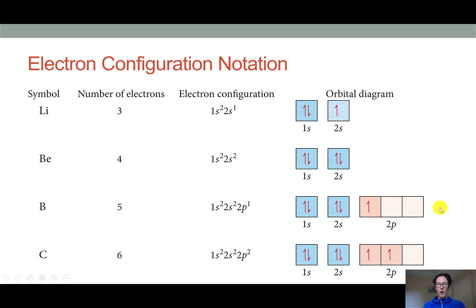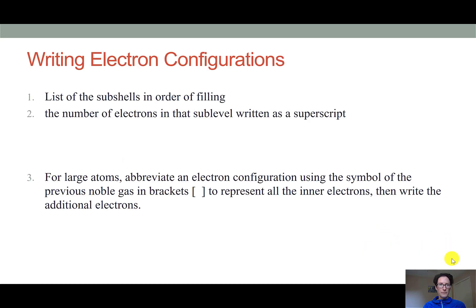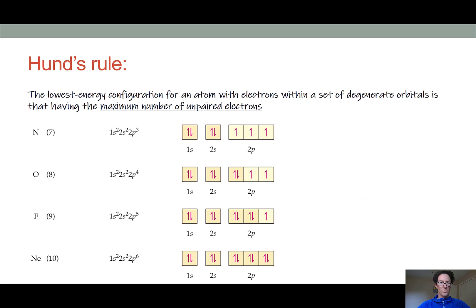Moving forward into carbon, we have a sixth electron. Here we come to an important rule. Notice that the sixth electron is going into a different p orbital, not partnering up with the first electron. The reason behind that is Hund's rule. According to Hund's rule, the lowest energy configuration for an atom with electrons within a set of degenerate orbitals is that having the maximum number of unpaired electrons.